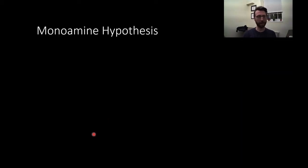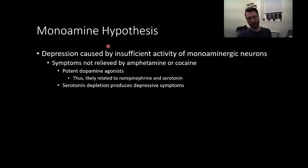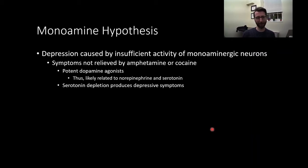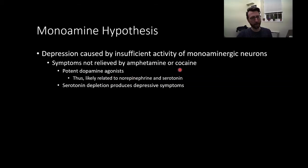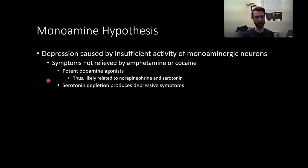The first thing we need to cover is the monoamine hypothesis — the idea that depression is caused by insufficient activity of monoaminergic neurons. We talked about monoamines earlier in this class, so go back and refresh your memory if needed. Symptoms are not relieved by amphetamine or cocaine, which are potent dopamine agonists, so it's most likely we're looking at norepinephrine and serotonin. An additional piece of evidence is that serotonin depletion produces depressive symptoms, which paints a strong case for serotonin being important.